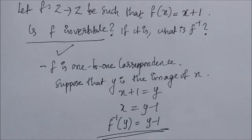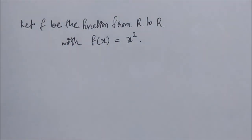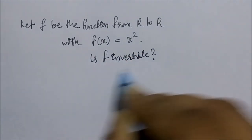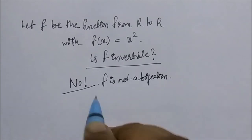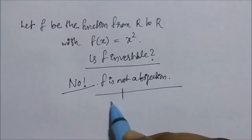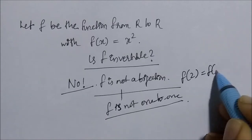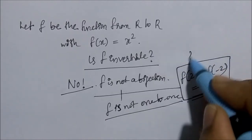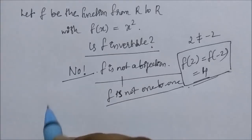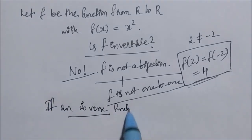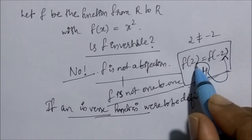Let f be the function from ℝ to ℝ with f(x) = x². Is f invertible? No, it is not invertible because f is not a bijection — specifically, f is not one-to-one. For example, f(2) = 4 and f(−2) = 4, so both 2 and −2 map to 4. When we try to reverse map, we would have to assign two values to the element 4, which is not a valid function.